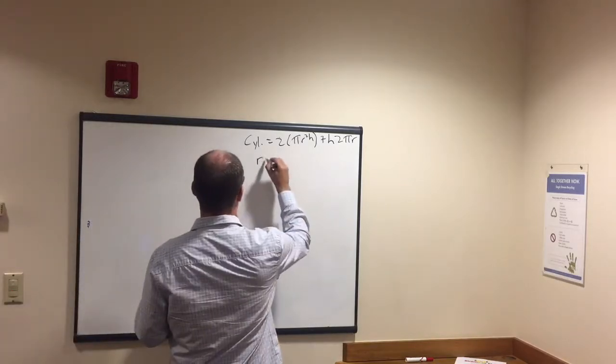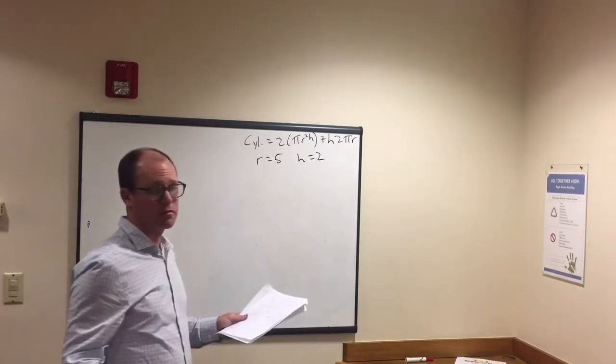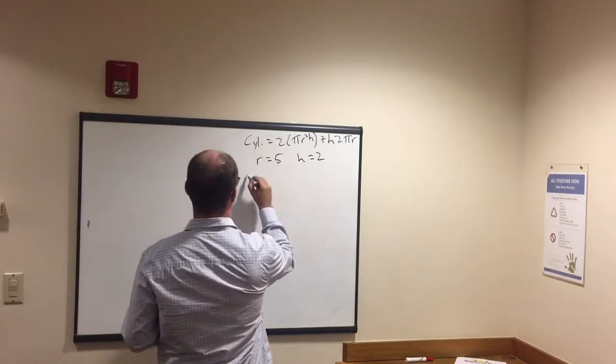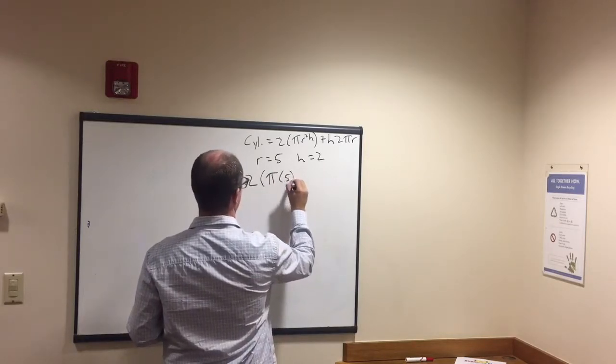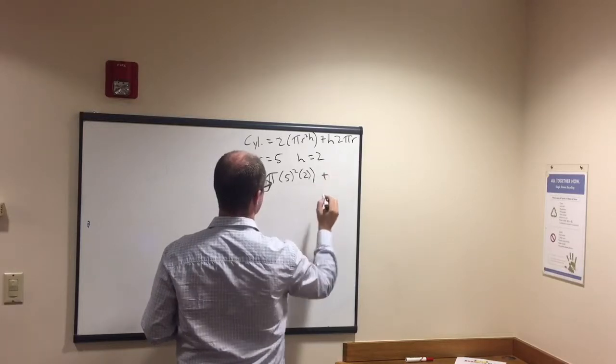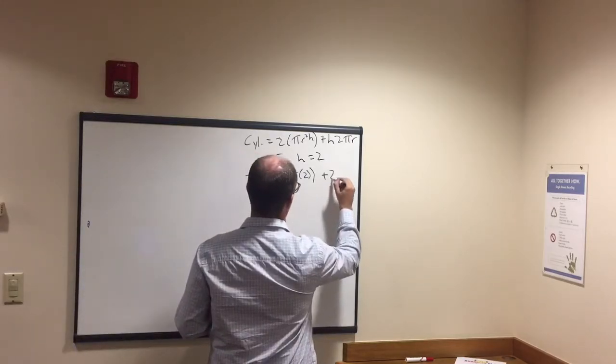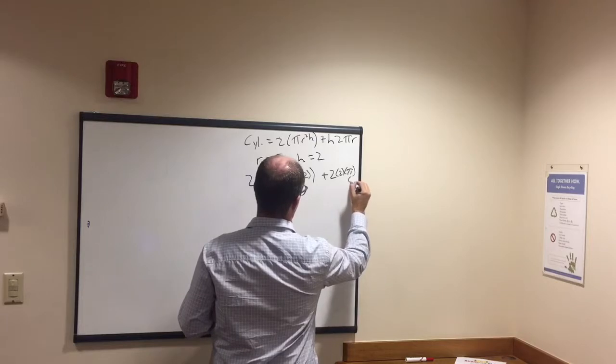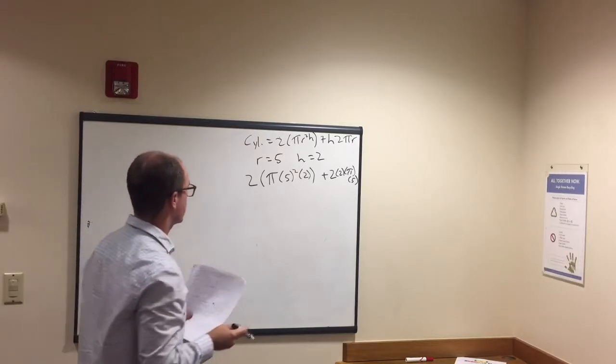In our example here, we're going to do another two examples on cylinder. Radius is 5, height is 2. Once we have these, we've got everything we need. Now we just need to plug it in and take our time so we don't make any mistakes with the math. So we start with 2 on the outside times pi. We're saying r is 5. 5 squared times height, which is 2. Plus the height is 2 times 2 times pi times the radius, which is 5.